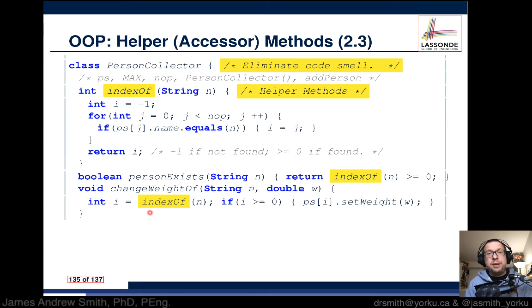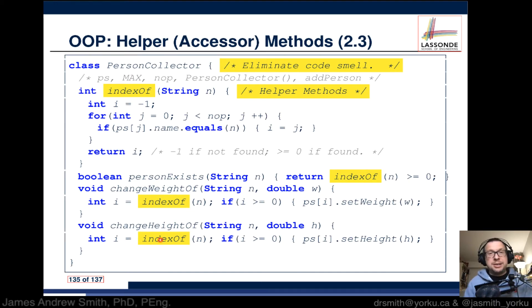For change weight of we have indexOf right here, so that's this string that we're inputting inside, that's the call. And again indexOf right there. We have refactored. We have simplified things. We also have one place to verify that this is correct, and then we reuse it there and there and there. That's efficient.